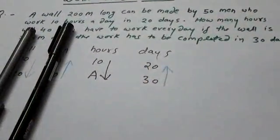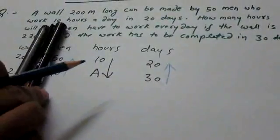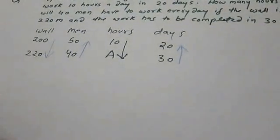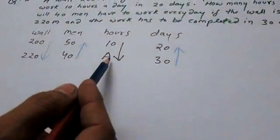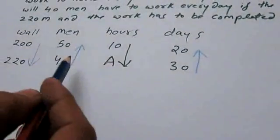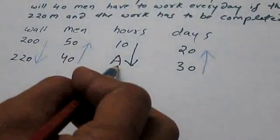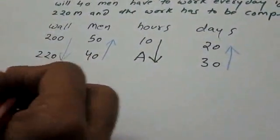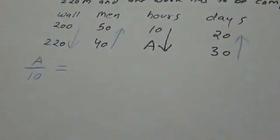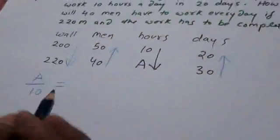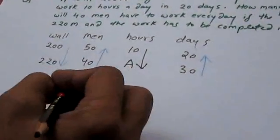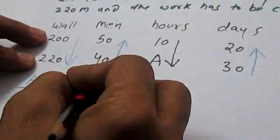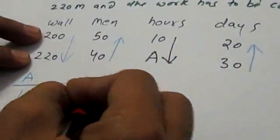Now for days: if we work 10 hours a day and complete in 20 days, and now we have 30 days to complete the work, how many hours per day — less or more? Less hours, because the days are more than sufficient. Which is less — 20 or 30? 20 is less, so the arrow points towards 20.